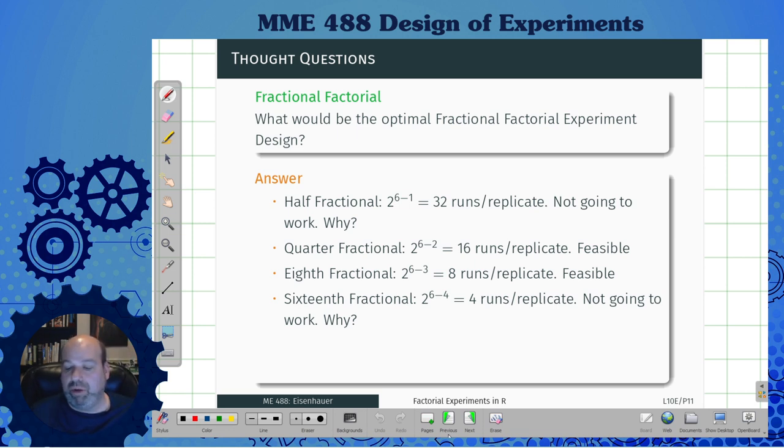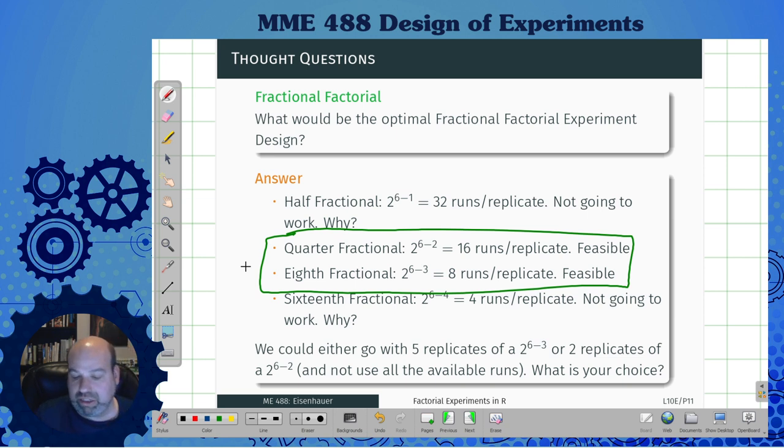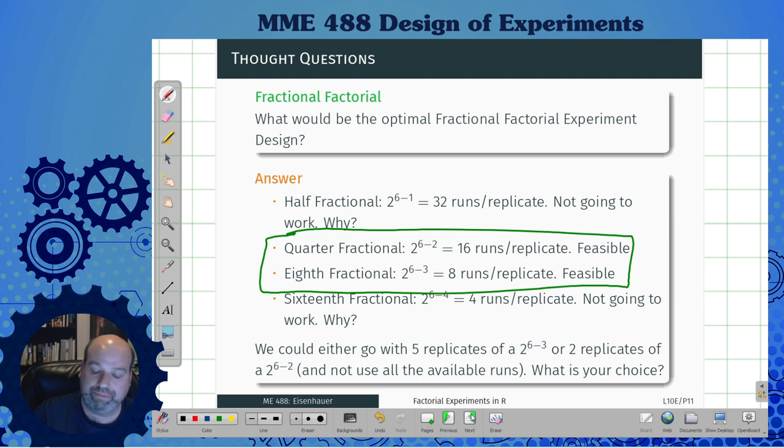If I did a sixteenth fractional, 2 to the 6 minus 4, I only have four runs per replicate. I can guarantee that's going to be at least a resolution 2 or worse type of situation. You're doing way too much aliasing. Sixteenth fractionals barely ever work at that low of a number of factors. So we're going to stick with the possibility of green lighting one of these two. We can either go with five replicates of the 2 to the 6 minus 3 or we can go two replicates of 2 to the 6 minus 2 and not use available runs. In this case we're going to go with the eighth fractional. Maximize my resources, everything seems to work great, so I'm going to use a 6-3-R.